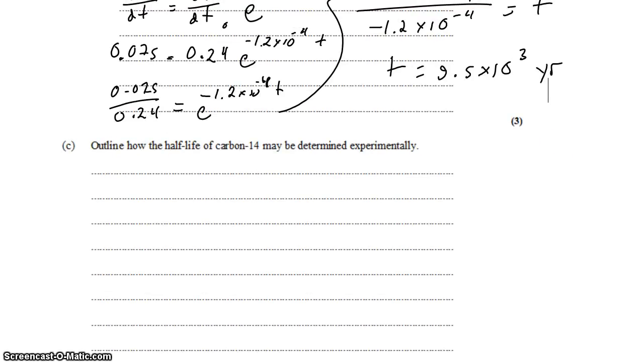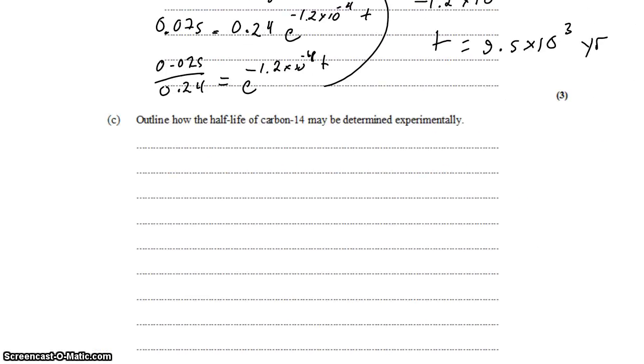Part C says to outline how the half-life of carbon-14 can be determined experimentally. Well, because the half-life is 5,700 years, it's not really appropriate to sit there and watch the carbon-14 decay and measure how long it takes. That's going to take too long. So we need another way.